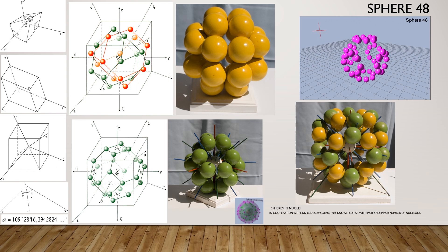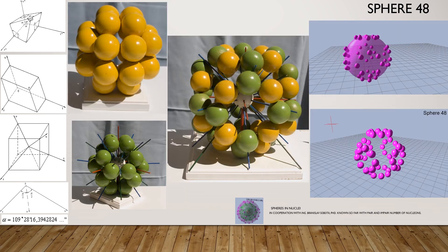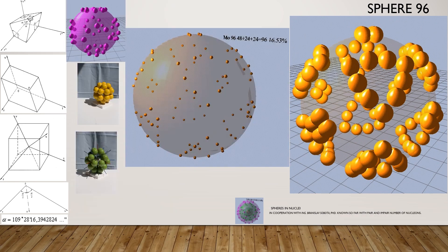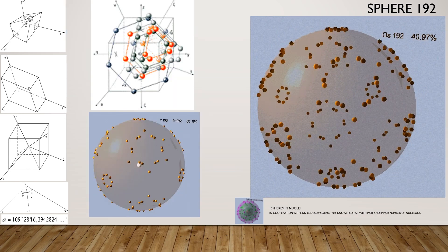Mutually inserted 12 alpha particles. Inserted 24 yellow and 24 green equals 48 yellow plus green. Mutually inserted 24 alpha particles. Inserted 48 and 48 equals sphere 96. Inserted 96 and 96 equals sphere 192.